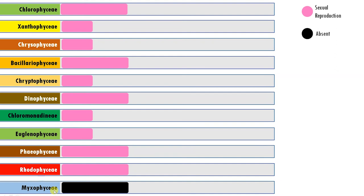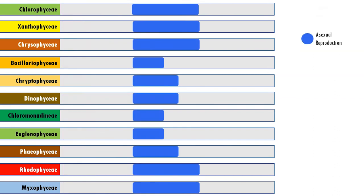An important feature is that Myxophyceae — the group of cyanobacteria — lacks the sexual mode of reproduction. When we analyze asexual mode of reproduction, all classes show it, and most classes prefer to undergo asexual reproduction. It is important to note that a particular class or organism can undergo multiple modes of reproduction; depending on environmental and growth conditions, plants will prefer their mode. Chlorophyceae, Xanthophyceae, Chrysophyceae, Rhodophyceae, and Myxophyceae prefer the asexual mode of reproduction.